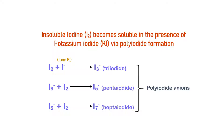The triiodide anion, being negatively charged, will dissolve or ionize in water. The triiodide ions may further react with an elemental iodine molecule to form the pentaiodide ion, and so on.